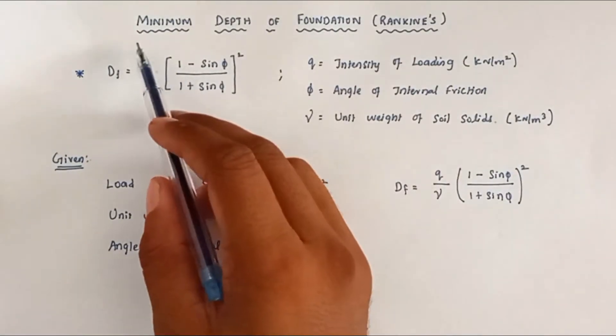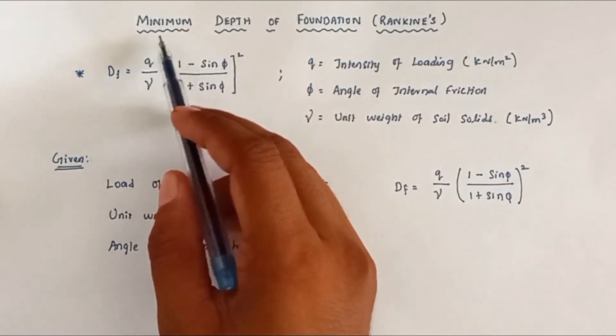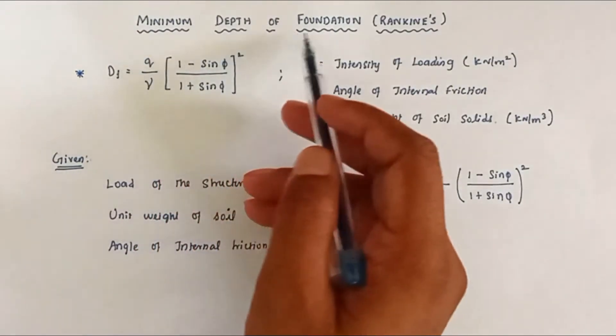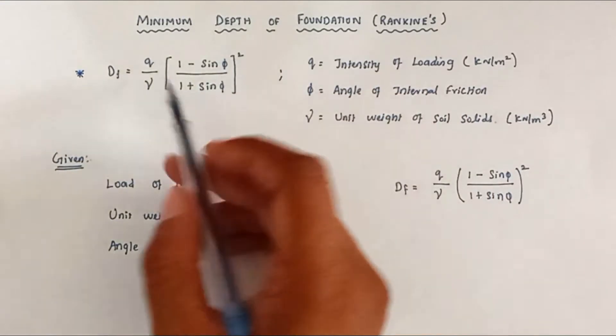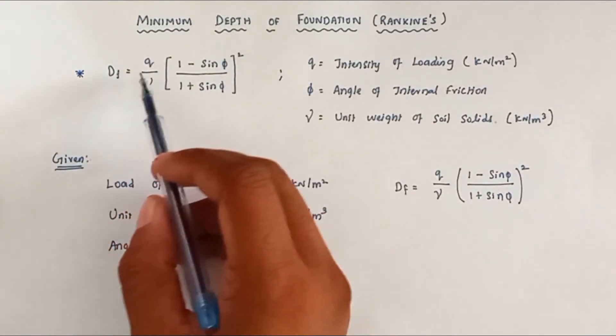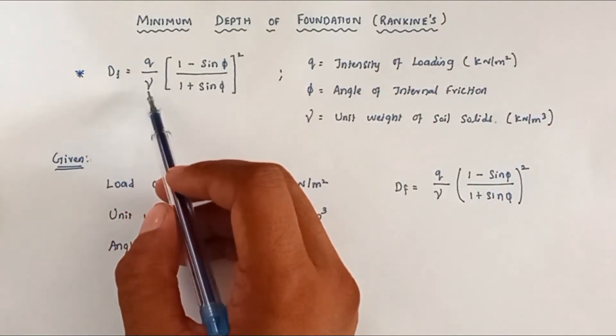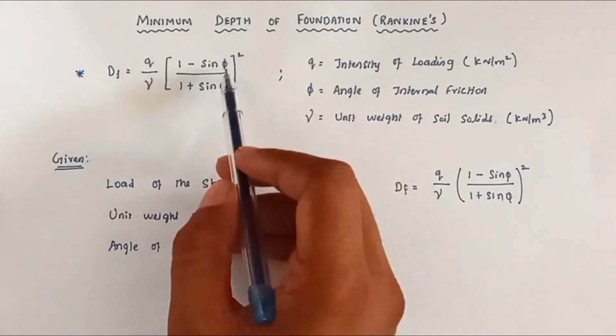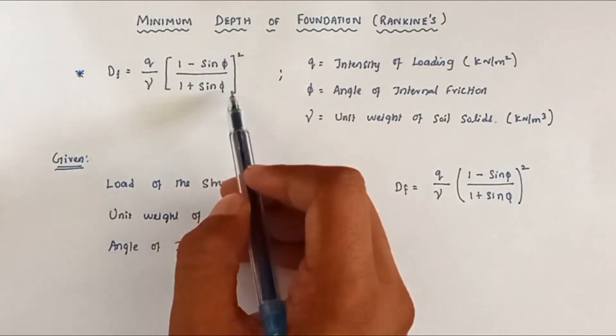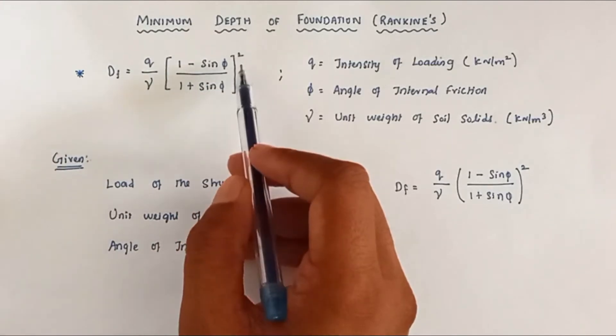Hello friends, today we are going to see how to calculate the minimum depth of foundation as per Rankine's formula. The formula is: df = (q / γ) × ((1 − sin φ) / (1 + sin φ))².